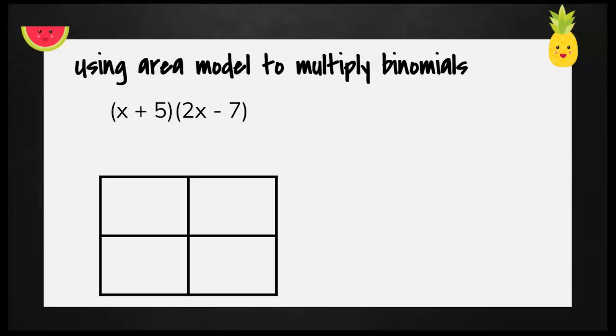Before we talk about factoring quadratics with the area model, we want to review how to actually use the area model to multiply binomials. When I want to multiply binomials, I can put my two parentheses outside of my box and multiply my sides together. So I have x times 2x is 2x squared.